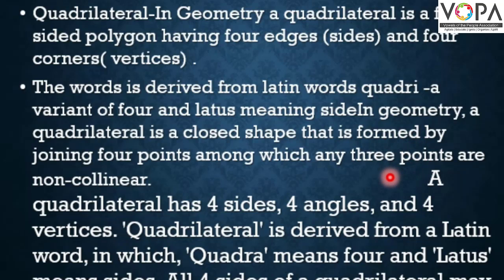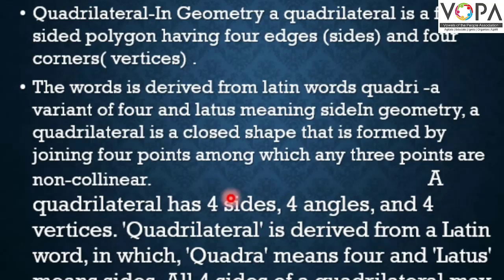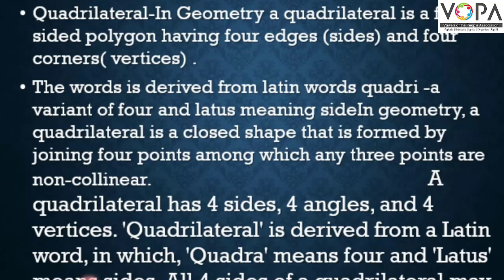In geometry, a quadrilateral is a closed shape that is formed by joining four points among which any three points are non-collinear. A quadrilateral has four sides, four angles, and four vertices. Quadrilateral is derived from a Latin word in which quadra means four and lattice means sides. All four sides of a quadrilateral may or may not be equal.